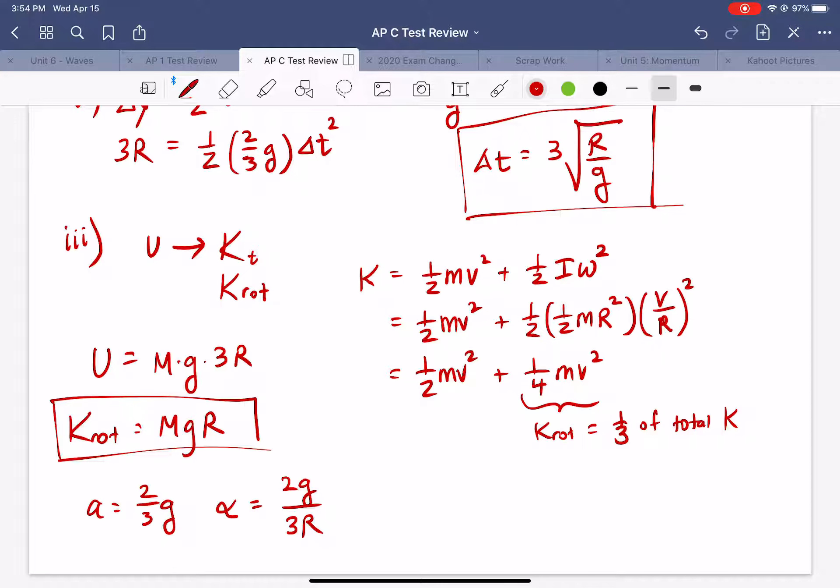All right so omega starts at zero and it's going to increase at this rate. So in general omega is equal to the initial velocity plus alpha times t and we determined in part two that the time is equal to three times root R over G. So if we simplify this we get two times the square root of g over R as our value for omega.